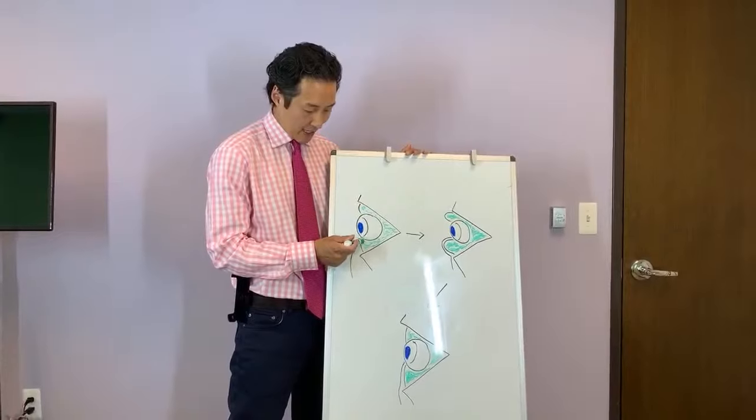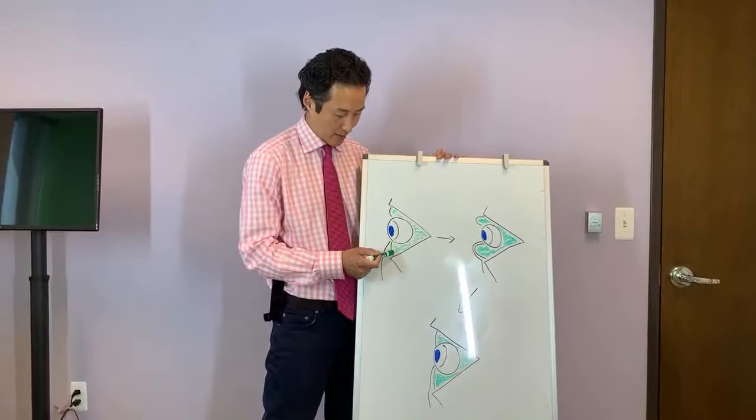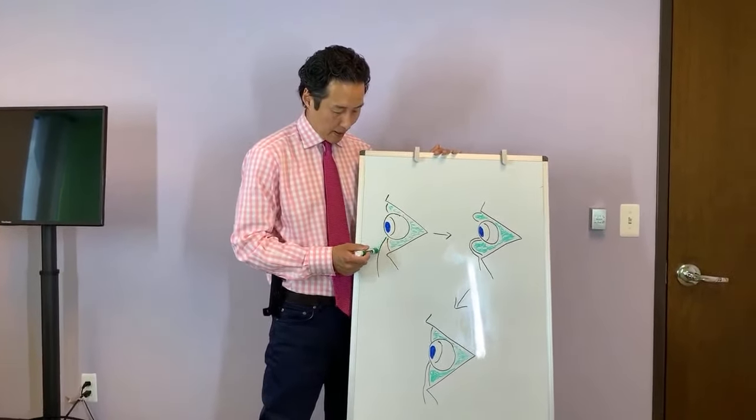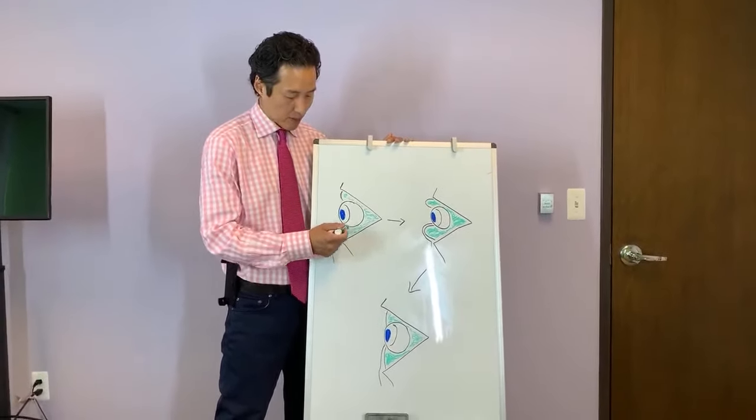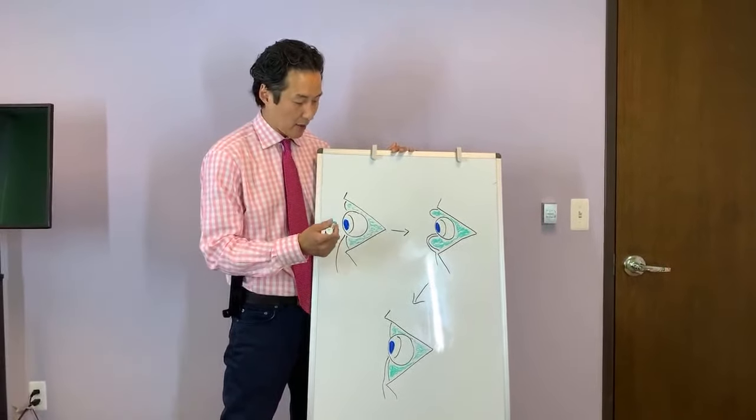Now the fat is held in place by a fibrous netting that we call the septum, and that's this right here. And on top of that, we have the fat of the cheek that helps to create a nice, smooth, filled out appearance of a youthful eye.